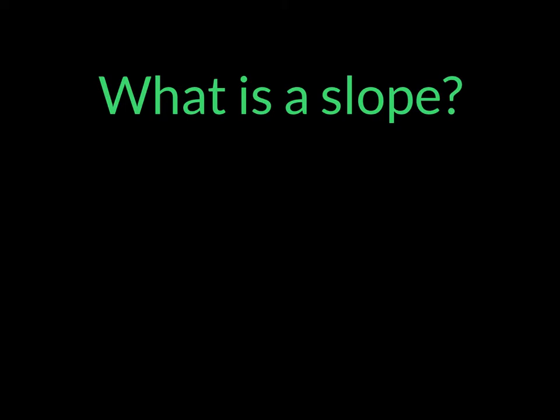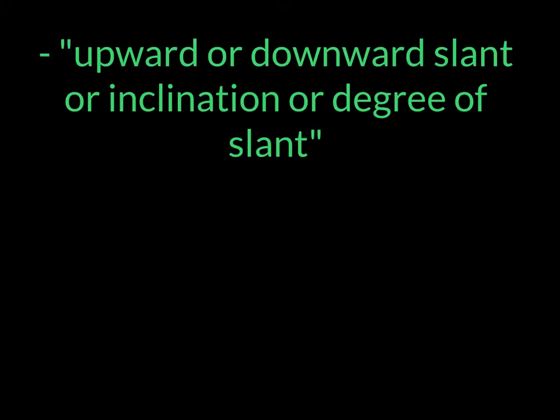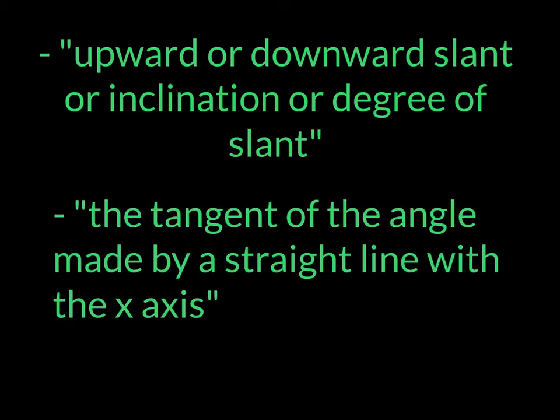You might be wondering at this moment, but what is a slope? According to Webster's online dictionary, a slope is the upward or downward slant or inclination or degree of slant, or the tangent of the angle made by a straight line with the x-axis. There are more definitions, but for us in math these are the most important.